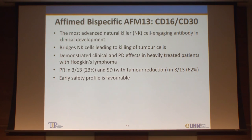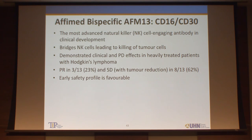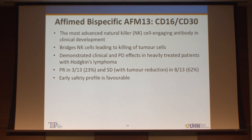One example to watch moving forward: Afimed has developed a bispecific called AFM13, where the business end is CD16 on the NK cell — not the T-cell — with CD30 as the target. This is being developed predominantly in Hodgkin's lymphoma by attracting NK cells into that milieu. Very early data shows PRs in 3 of 13 patients, stable disease in another 8 of 13, with a favorable safety profile. We're going to see more from this strategy manipulating NK cells.